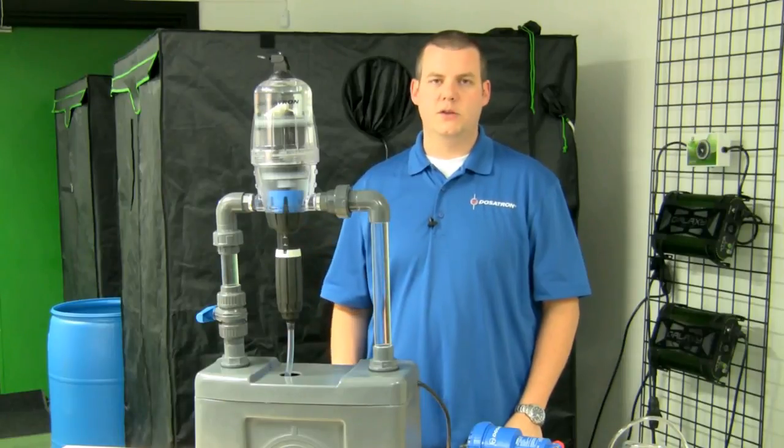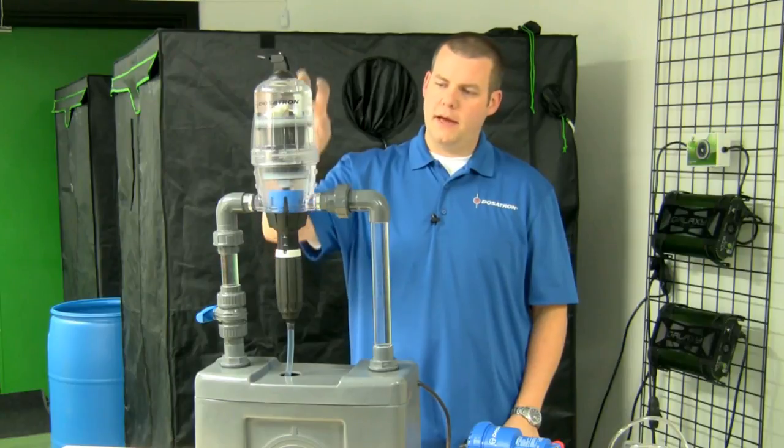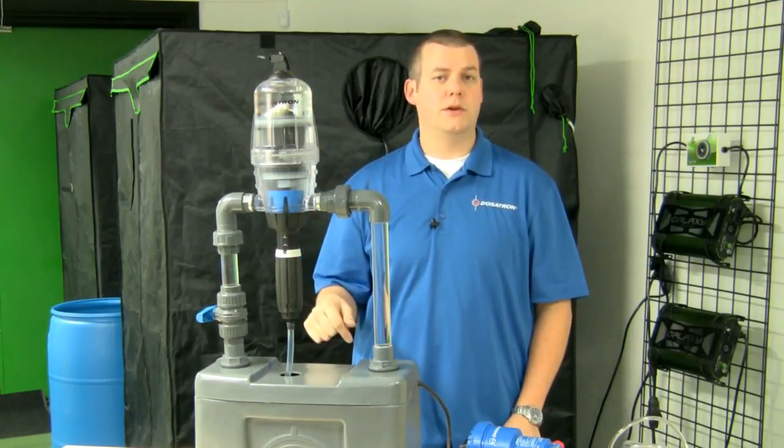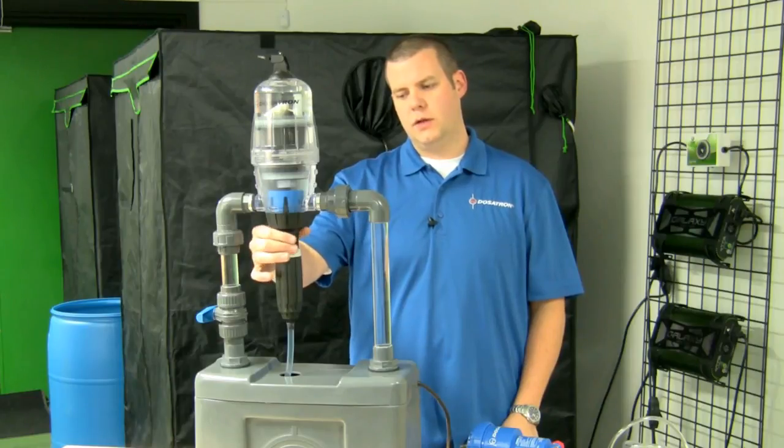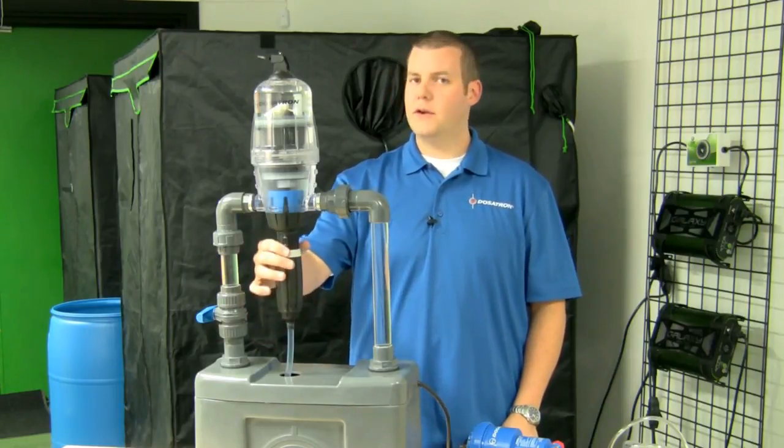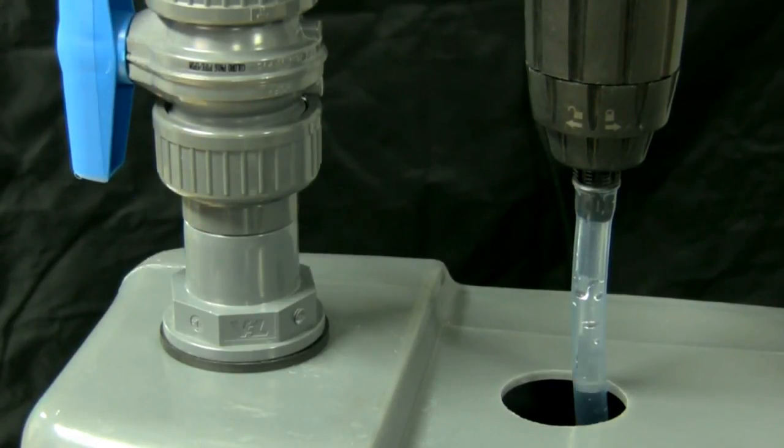The science behind a Dosatron is that we've got a piston which moves up and down that's connected to what we call a plunger. That plunger has a seal on the bottom that runs through the injection step. Working very similar to a syringe, it draws that product up, brings it up into the bottom housing, and blends it right here in line.